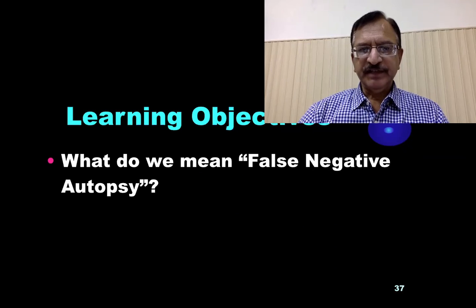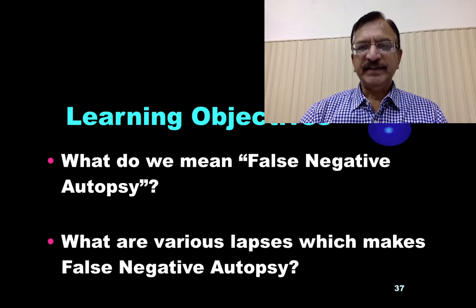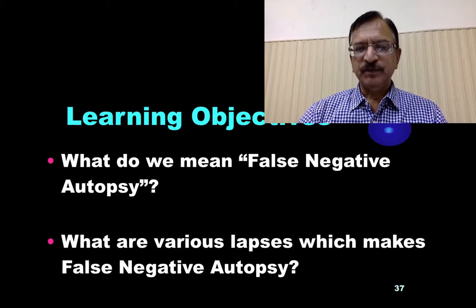The learning objective of this lecture will be to learn what we mean by false negative autopsy and what are the various lapses. Basically, these are the lapses which make an autopsy negative — the various lapses which make a false negative autopsy.